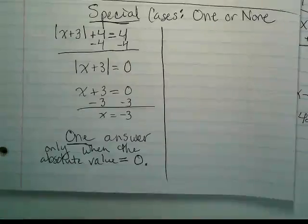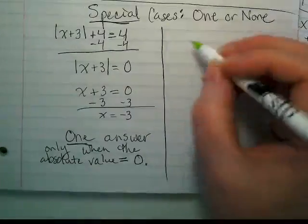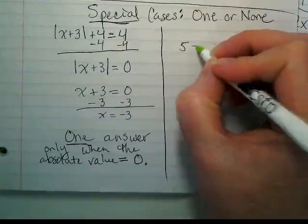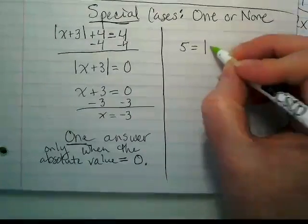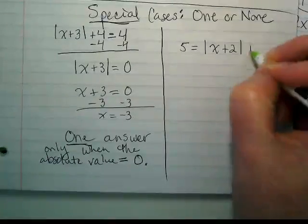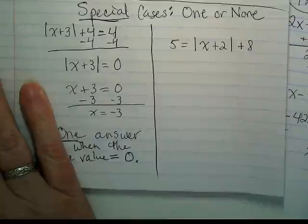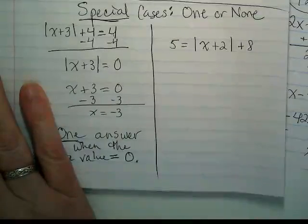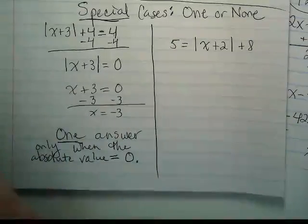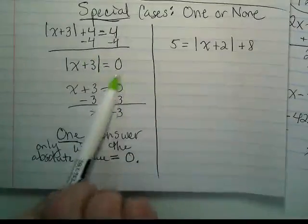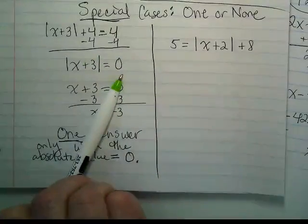So there's our one. Now we're going to go to our none. Write this example down. Five equals the absolute value of x plus two plus eight. These ones aren't as obvious to me when I just glance at them. Because when I saw this, I knew right away we were going to equal zero. That's pretty easy to look a step ahead of yourself and see.